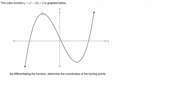So what we're asked to find is the coordinate of this point here, we might call it A, and this point here we'll call B. Using calculus, at the turning points, we know that the derivative or the gradient of these functions is equal to 0. So basically, we're going to differentiate this to get a gradient function, set that equal to 0 and then solve for our x coordinates.